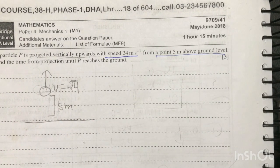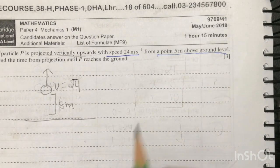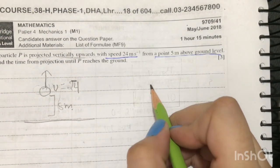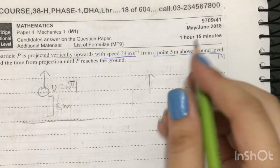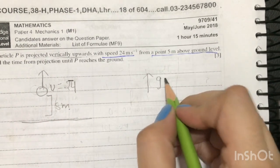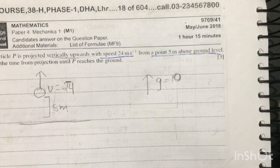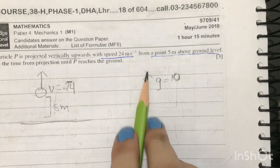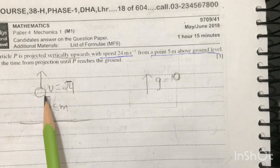Now another point to notice, and the examiner expects you to know, is that whenever a particle is projected vertically upwards it is working against the force of gravity. Now we all know gravity has a magnitude of 10. Since it is working against gravity, your particle will slow down as it moves forward.